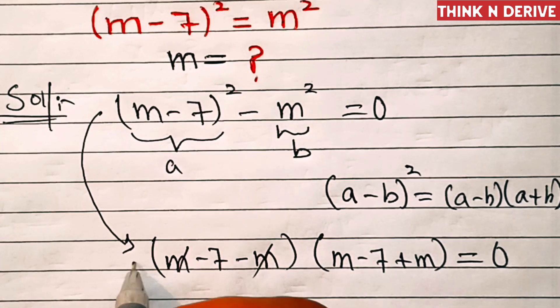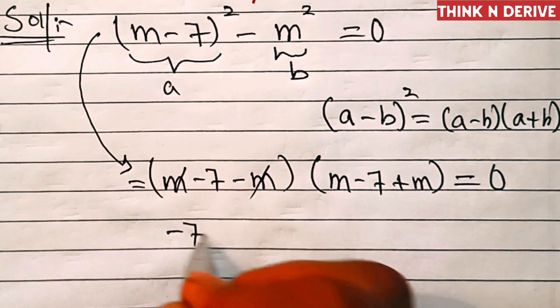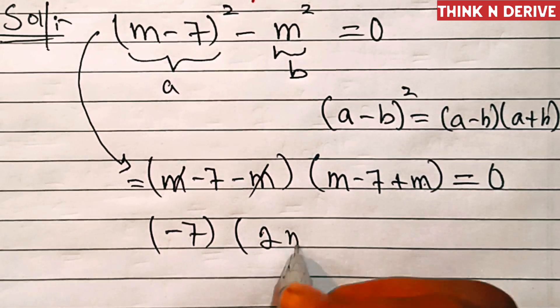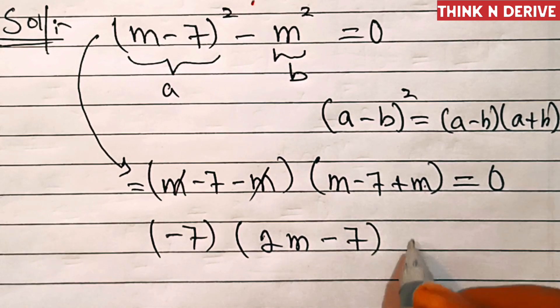Now this m and this m will get cancelled out, so this is minus 7 times m plus m, which is 2m minus 7, equals zero.